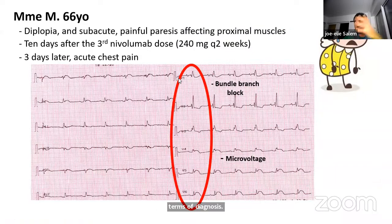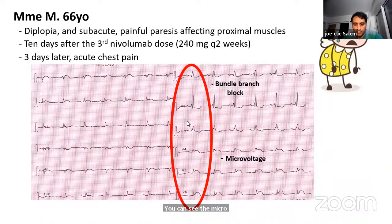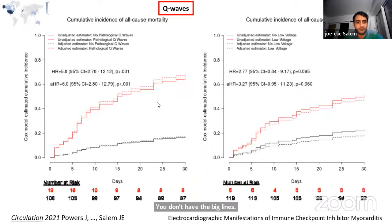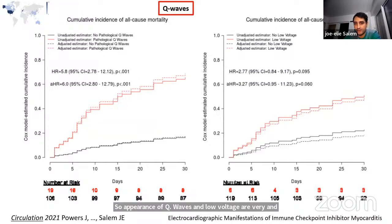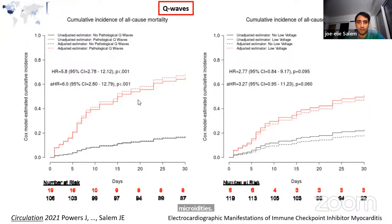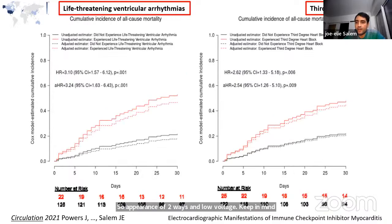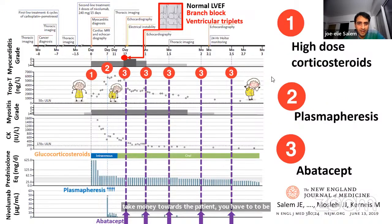The first presented case also showed micro-voltage and bundle branch block. Appearance of Q waves and low voltage are associated with a five- to six-fold increase in MACE and all-cause mortality. Occurrence of life-threatening ventricular arrhythmia and third-degree AV block are also very high-risk surrogates for mortality in these patients.